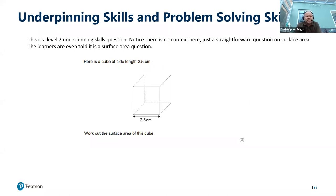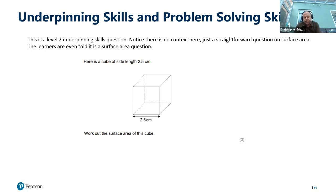Here is a level two underpinning skills question. There's no context — it's a straightforward question on surface area, and learners are even told it's a surface area question. They're given a cube with its side lengths and told to work out the surface area. All they need is the knowledge of how to work out surface area; if they have that knowledge, they can work it out and get the three marks.